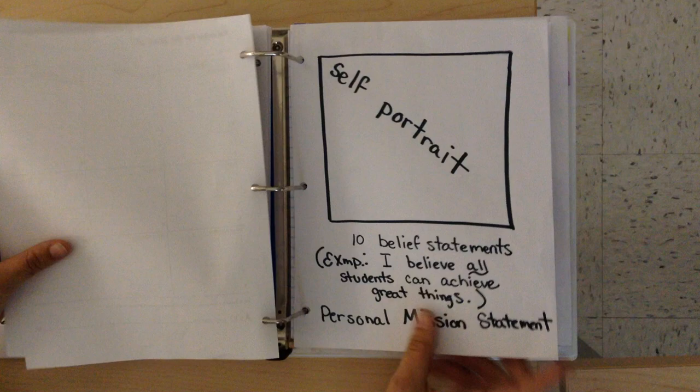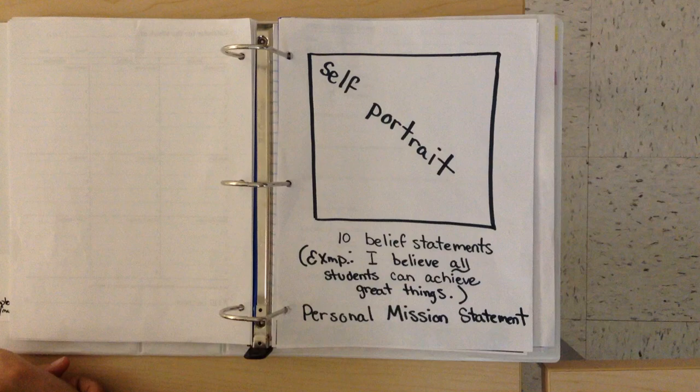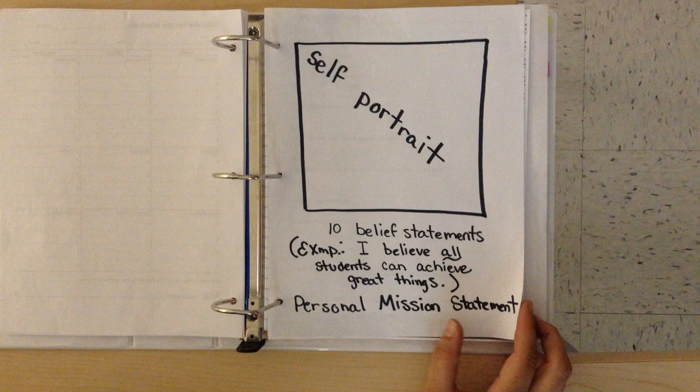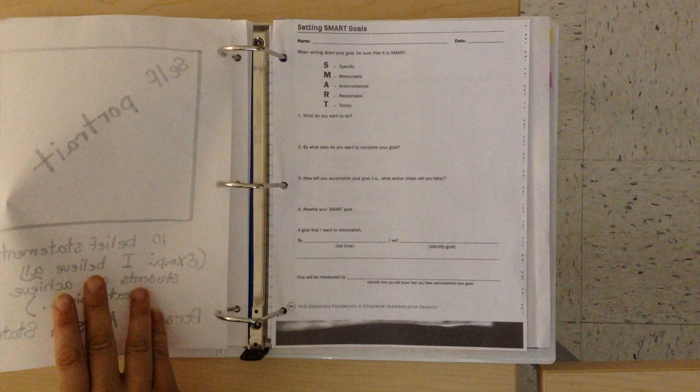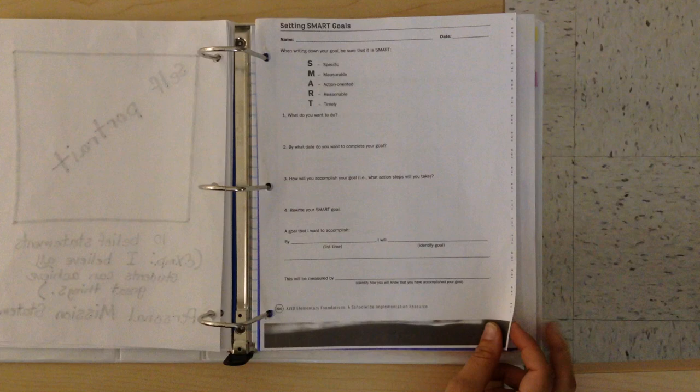After the calendar, you will see a sheet for your self-portrait and your belief statements. At the bottom of your belief statements, you are coming up with a personal mission statement for the year. Teachers, instructions for this activity will be in your boxes. A template for setting SMART goals is behind the self-portrait and mission statement.